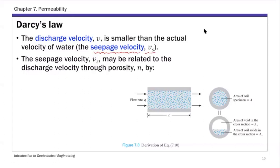The reason we have these two different velocities is because soil is a multi-phase material. Within a soil specimen, you have particles and also voids in between particles. What you measure in the flow experiment is the discharge — that's the apparent or overall velocity, v. If you look inside the soil specimen, water can only flow through those void spaces; water cannot flow through solid particles.